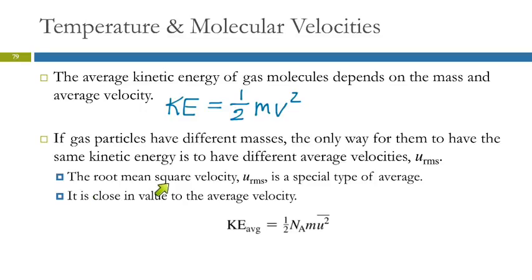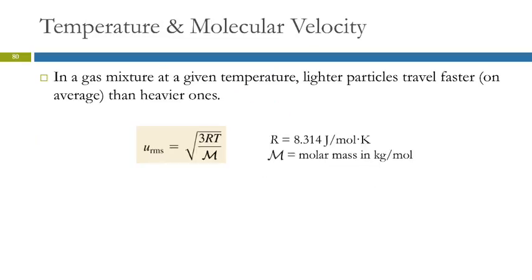The root mean square velocity, it's U_RMS, RMS for root mean square. This is just a special type of average, and you don't want me to explain that to you. So we're just going to say that's a special average. We'll just be okay with it. It's close in value to the average velocity. The average kinetic energy is one-half, here, N is Avogadro's number times the mass times that root mean square velocity squared. I guess that would just be the mean square velocity.